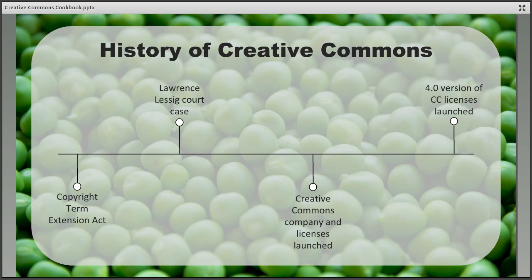With Creative Commons licences, the creator retains the right to their work but allows others to see at a glance what they're allowed to do with it, which simplifies the process of building on existing knowledge to create new outputs. It's important to remember that Creative Commons licences sit alongside copyright and as a result they don't impact any existing exceptions or limitations such as using materials for educational purposes. They are simply designed to make the sharing and reuse of outputs easier.